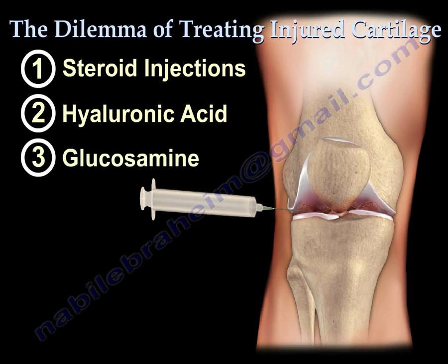Glucosamine is another option for treatment that can be injected directly into the joint. Glucosamine is a modified sugar that is formed by the human body and is used to form larger molecules involved in the formation and repair of cartilage.